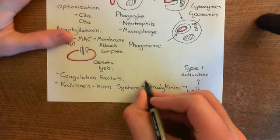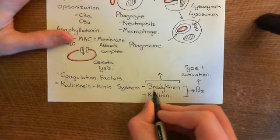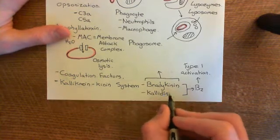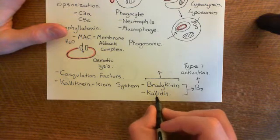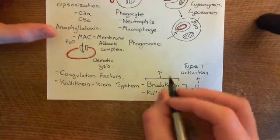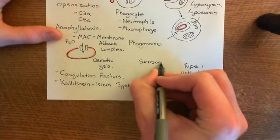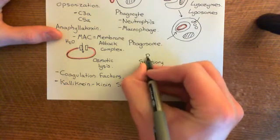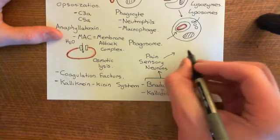Bradykinin and calidin are also very powerful pain-inducing molecules. Bradykinin is the most powerful pain-producing molecule known — if you inject it, it will cause intense pain. It acts on sensory neurons — specifically pain sensory neurons — and this is what causes the pain associated with an inflamed area. In Latin, dolor is the word for pain.